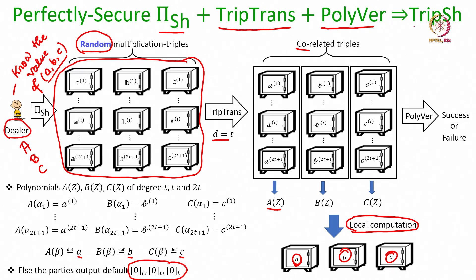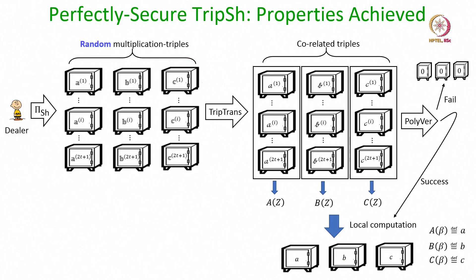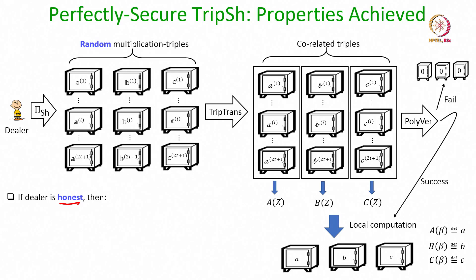So that is the triple sharing protocol. Now let us prove each of the properties which we desire from this triple sharing protocol. Let us first prove a bunch of properties if the dealer is honest. Remember, this is a dealer-specific protocol and we have a bunch of requirements for an honest dealer and another bunch of requirements for a corrupt dealer.